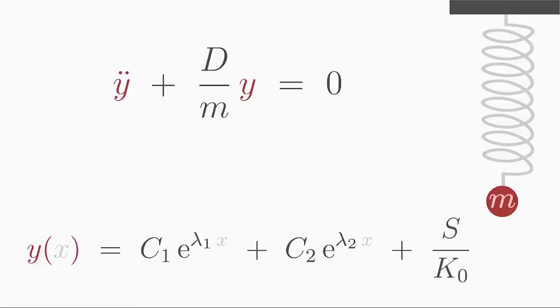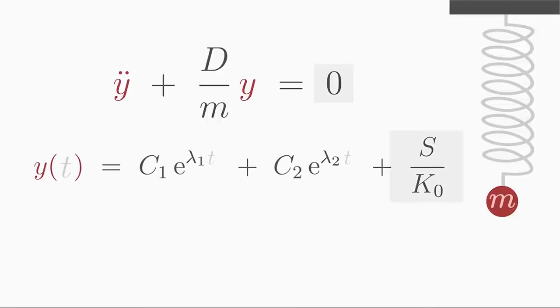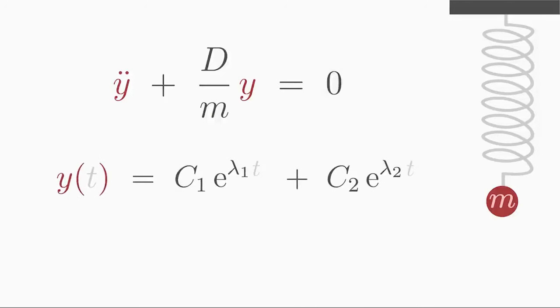Do you remember the differential equation for the oscillating mass? This is a second-order differential equation with constant coefficients. The perturbation function is zero. That means we only have to find out the homogeneous solution.